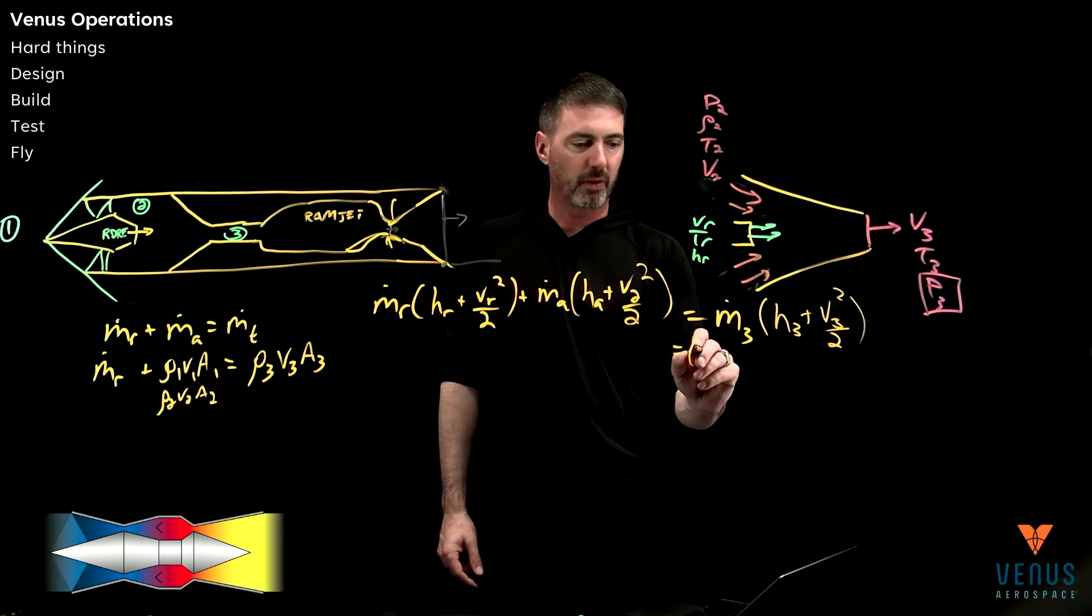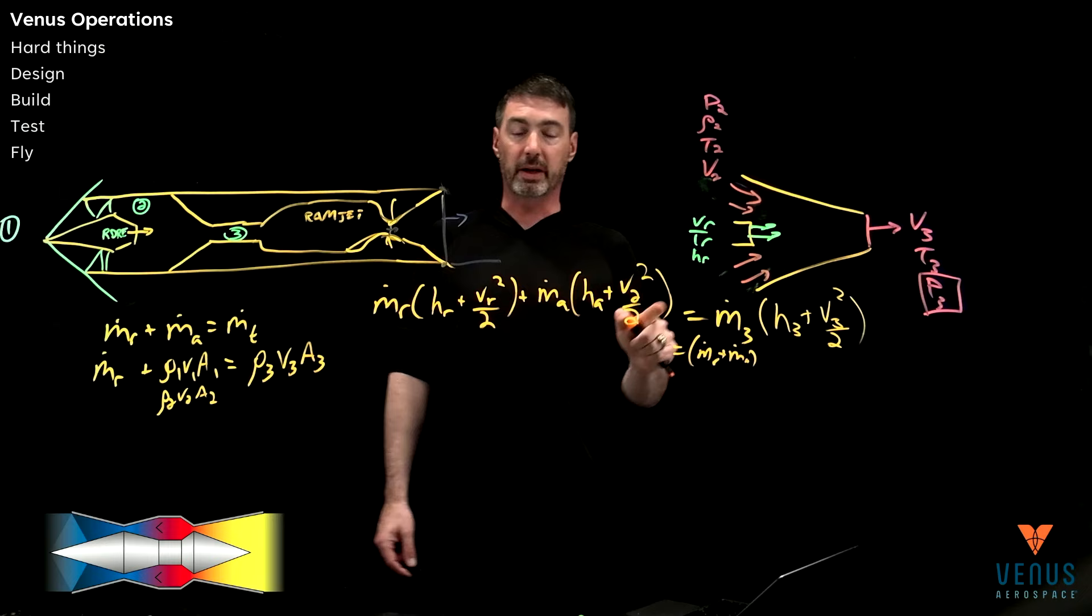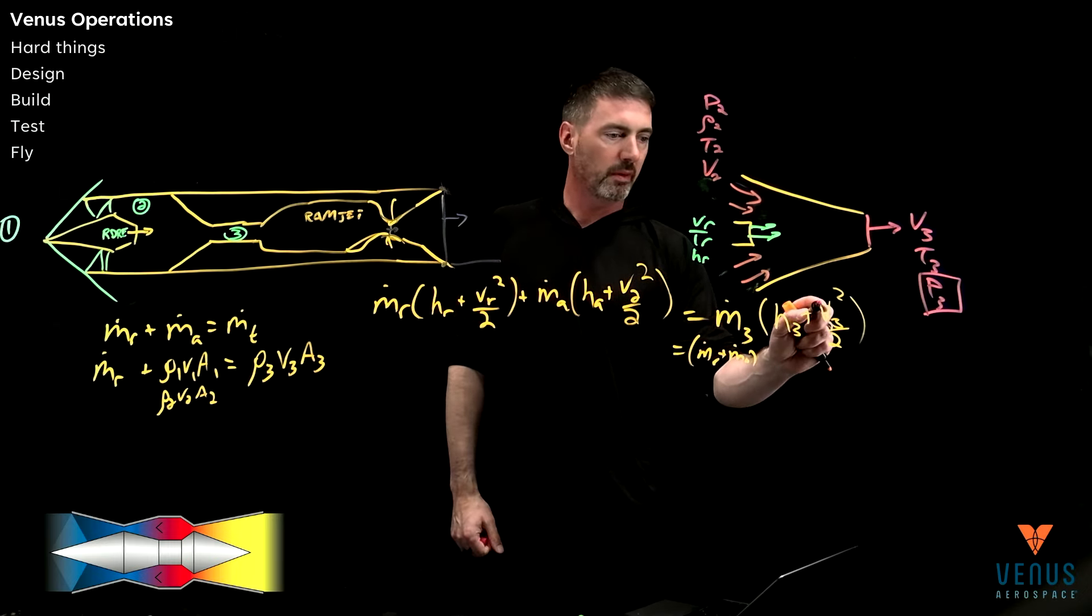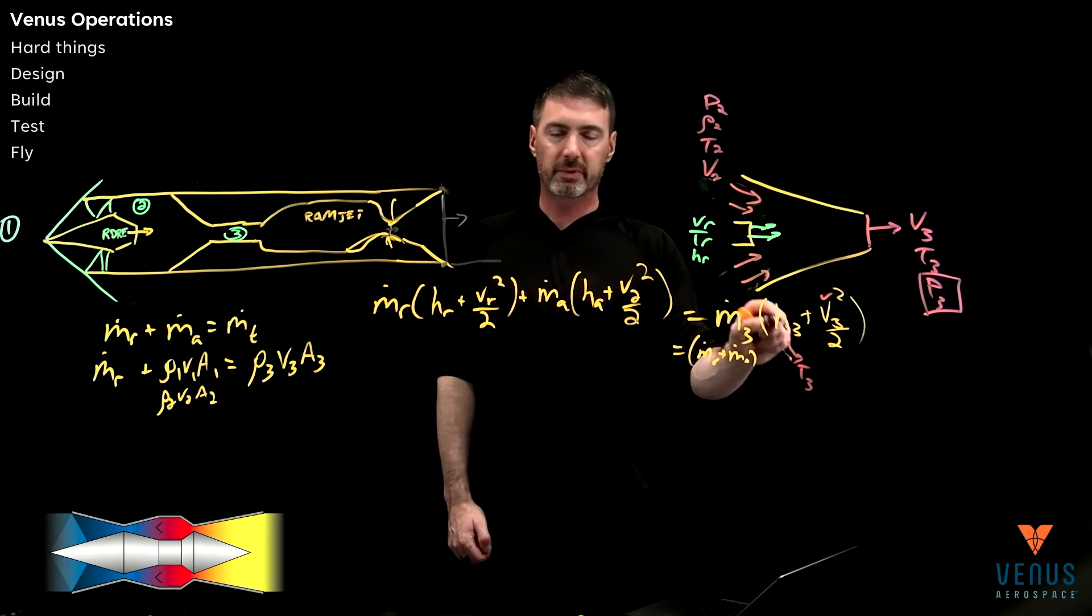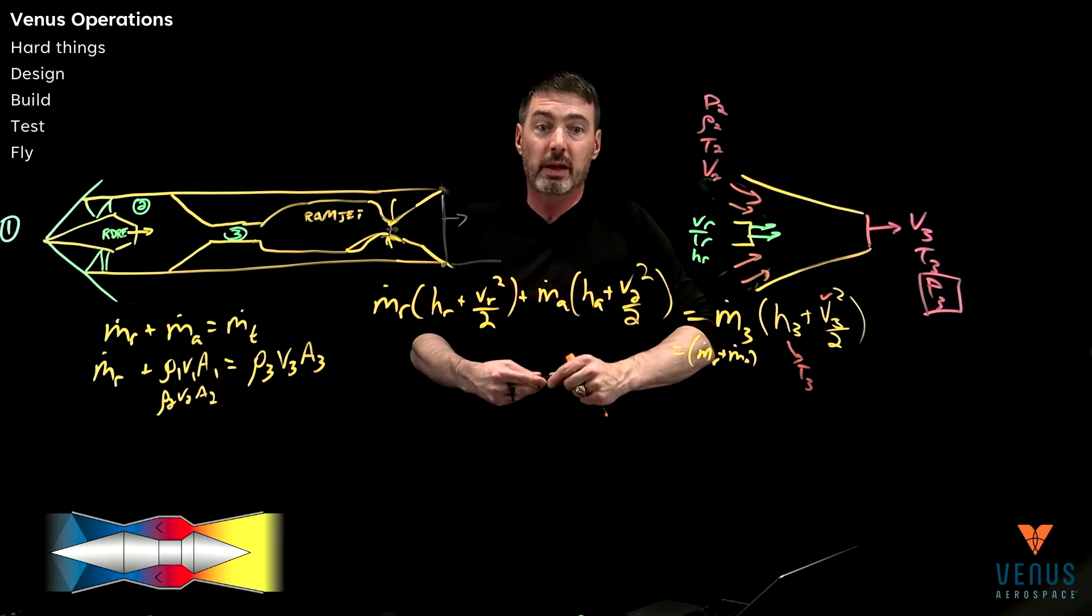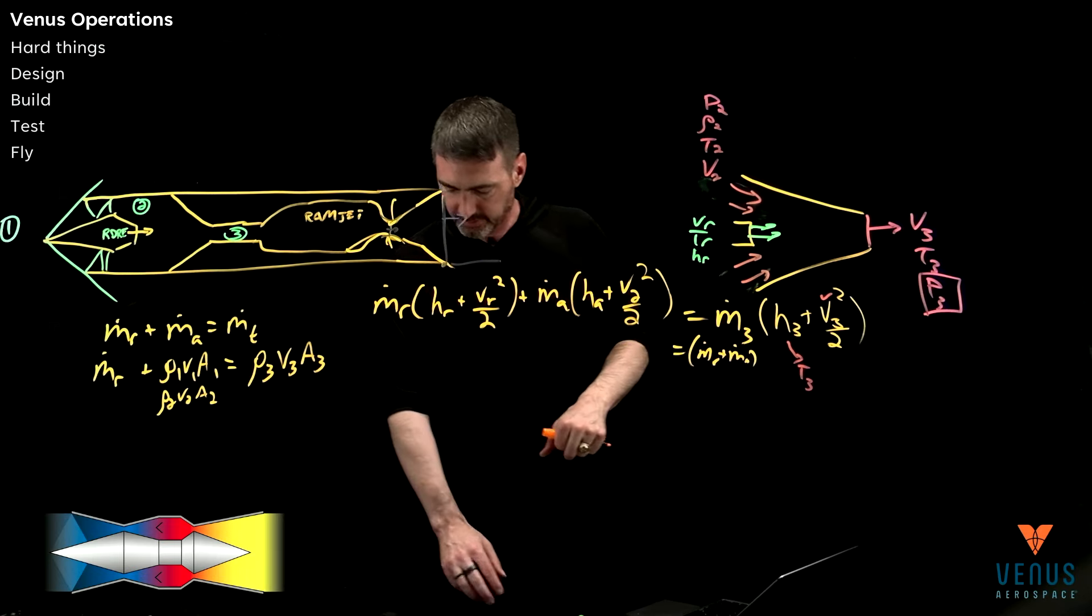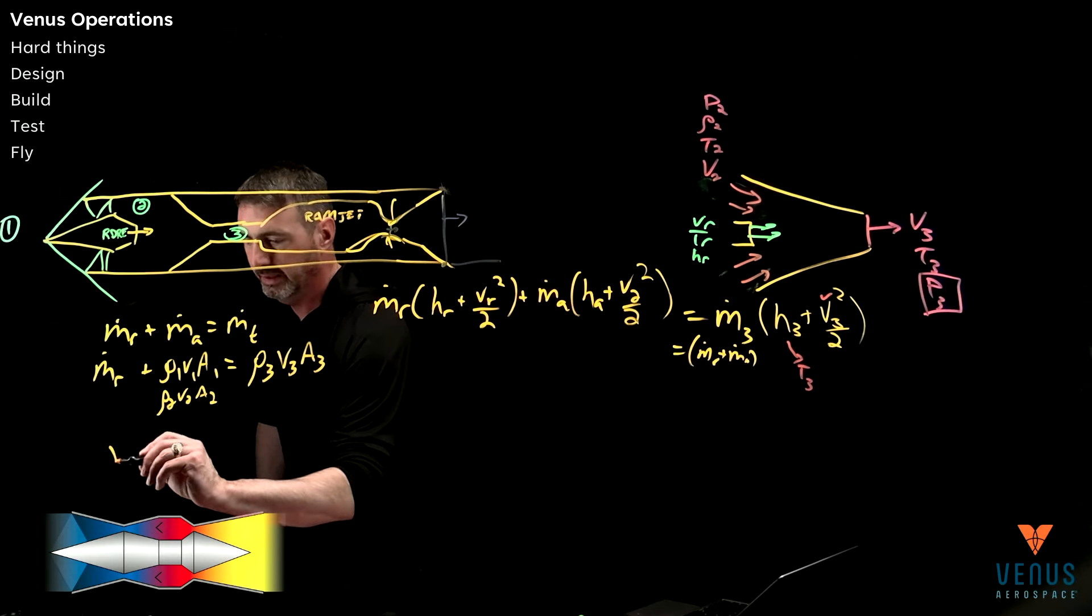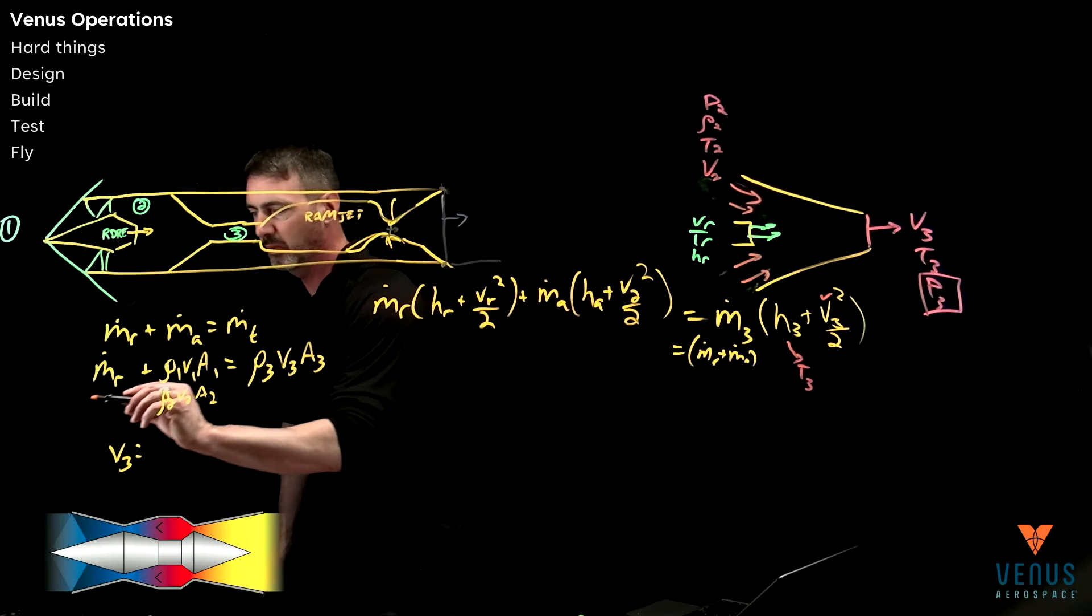That is enthalpy 3 plus V3 squared over two. From this position I can split this up and know it's the mass flow rate of the rocket plus the air, so this variable is known. Really the thing that I don't know in this equation is we still don't know V3 and we don't necessarily know T3. And of course we don't know p3 - I haven't written down here any equation on p3, so we're still missing a variable.